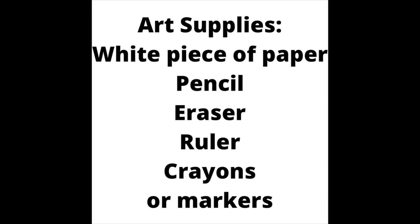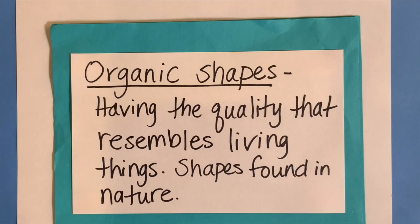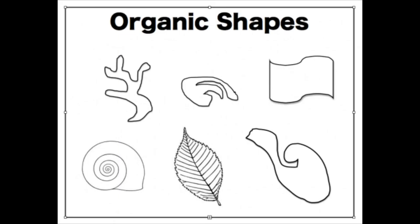All right, second grade. Thank you for joining me at the art table. I hope you have your supplies — a piece of white paper, something to draw with, something to color with, and if you have a ruler or an eraser, you'll find those helpful too. Let's practice drawing some organic shapes, and then we will practice our creative lettering. Organic shapes have the quality that resembles living things, shapes found in nature like our insects, but also just random shapes. They usually are curvy and wavy.